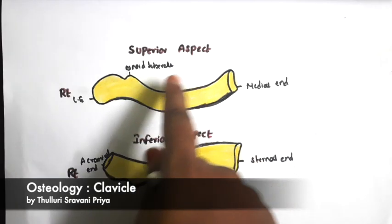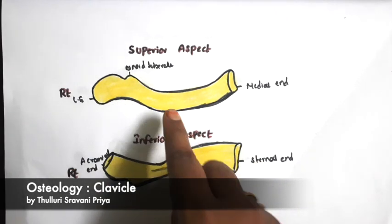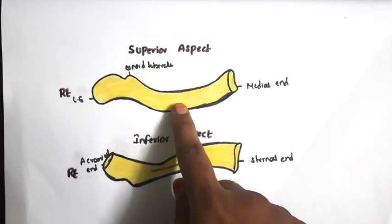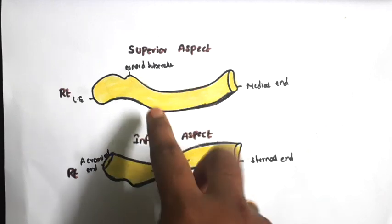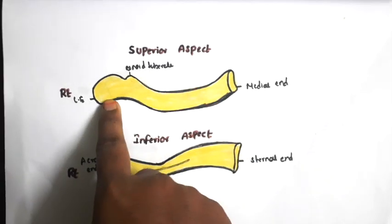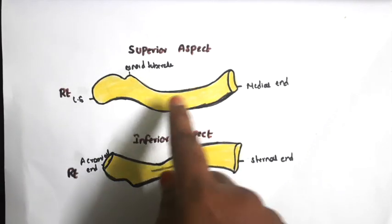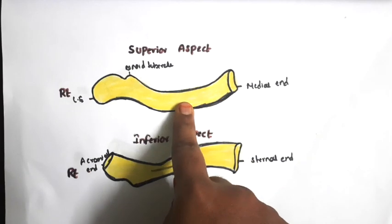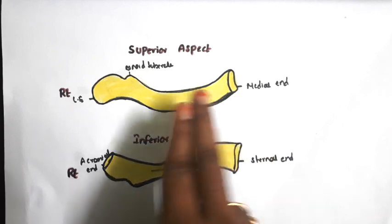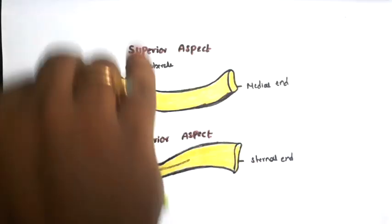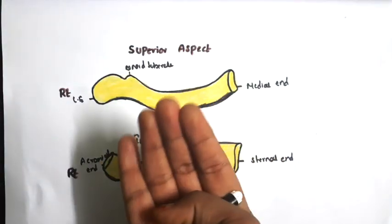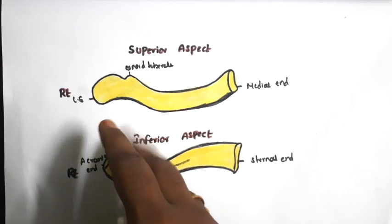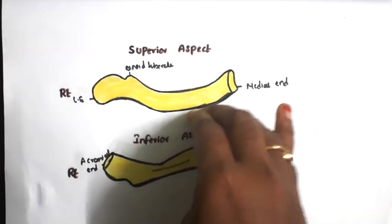Now we will see the parts of the clavicle. This is the right-side clavicle showing superior and inferior aspects. The shaft is divided into medial two-third and lateral one-third. The medial two-third is rounded and cylindrical, having four surfaces: anterior surface, superior surface, posterior surface, and inferior surface.